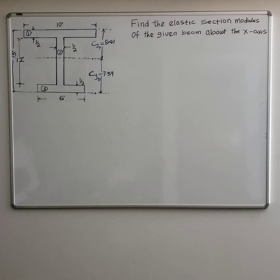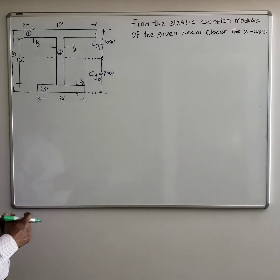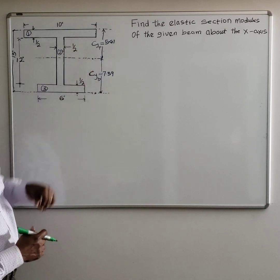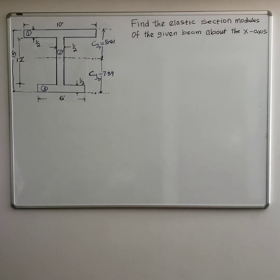Initially we solved for the centroid along the y-axis about the x-axis. As you can see the value, CY from the bottom is 7.39 inches and CY from the top is 5.61 inches. So we solved that earlier in a previous video.